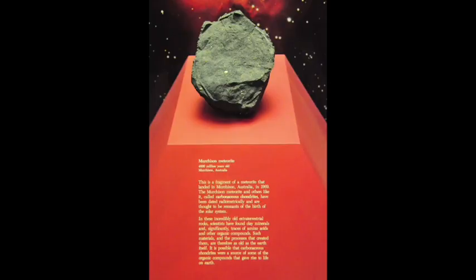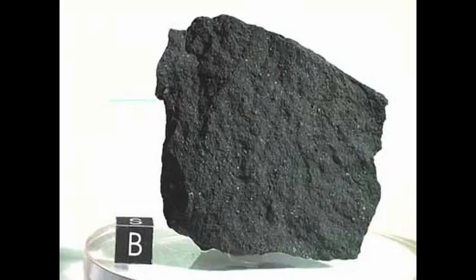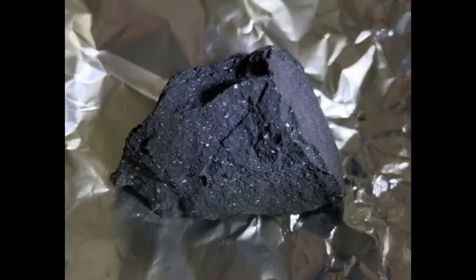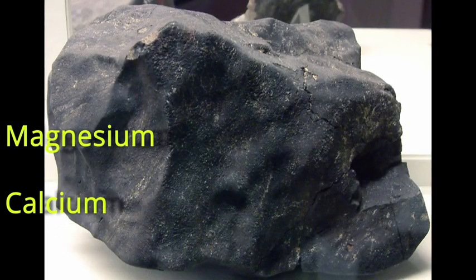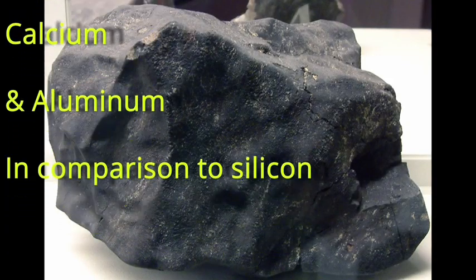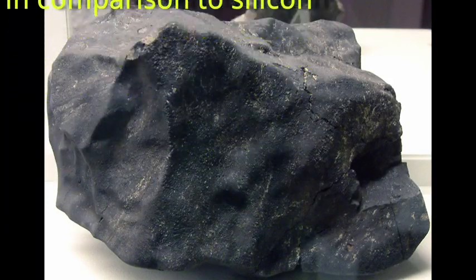One misconception about carbonaceous chondrites is that they contain high levels of carbon. However, this is not always the case. In fact, some carbonaceous chondrites are actually carbon poor. So what sets them apart from other chondrites? It's their relatively higher abundance of magnesium, calcium, and aluminum in comparison to silicon.